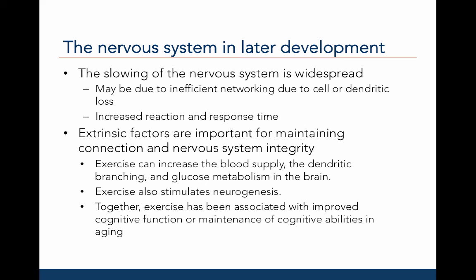Extrinsic factors are important for maintaining connections and nervous system integrity. For example, exercise can increase blood supply, dendritic branching, and glucose metabolism in the brain, and can also stimulate neurogenesis. Perhaps as a result of these changes in the brain, exercise has been associated with improved cognition and the maintenance of cognitive abilities in aging.